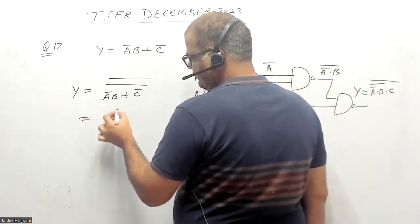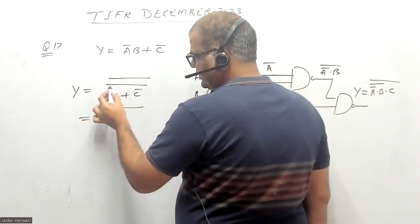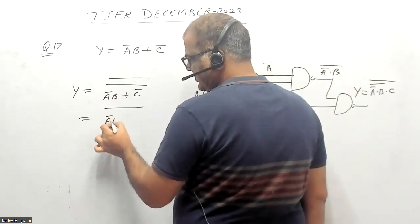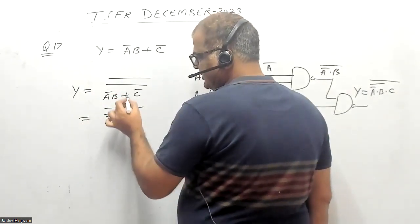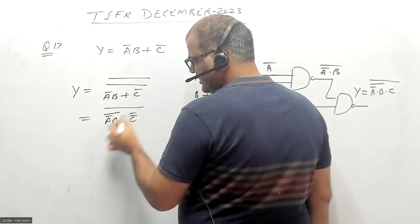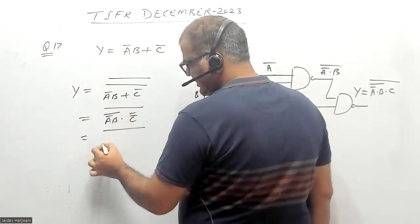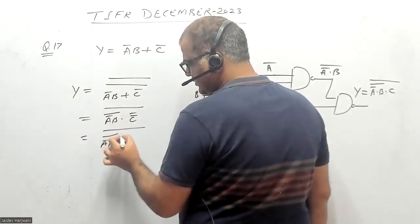If you simplify further, this will become (A̅B)̅, which converts the OR gate. This becomes C̅, and you can further write (A̅B)̅ with C.